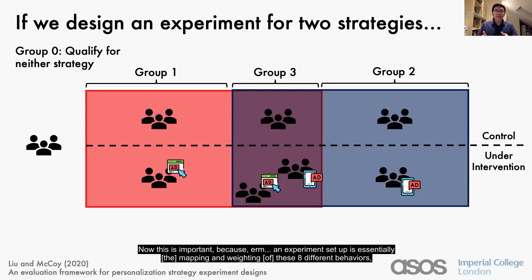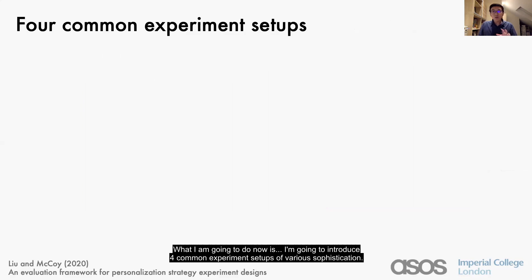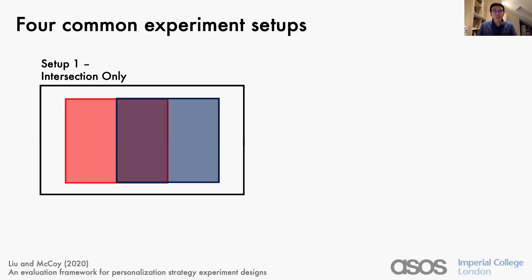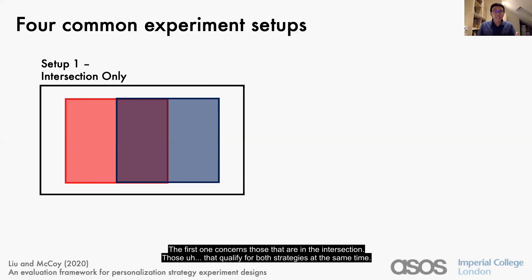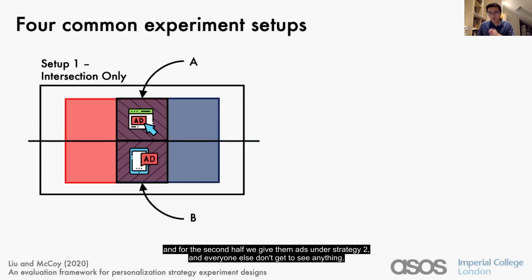An experiment setup is essentially a mapping and weighting of these eight different behaviors, and what we want to see is which setup stands the highest chance to detect a treatment effect if one exists. The first setup concerns those in the intersection — those who qualify for both strategies at the same time. We randomly split them into two halves: the first half receives ads under strategy one, and the second half receives ads under strategy two. Everyone else doesn't get to see anything.